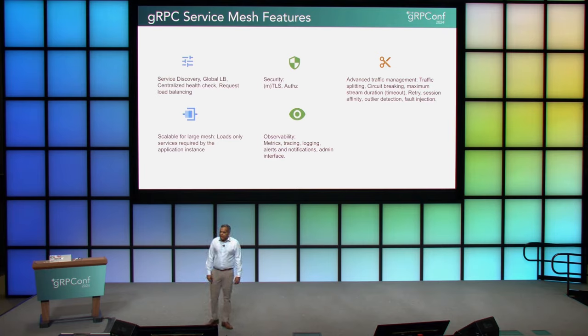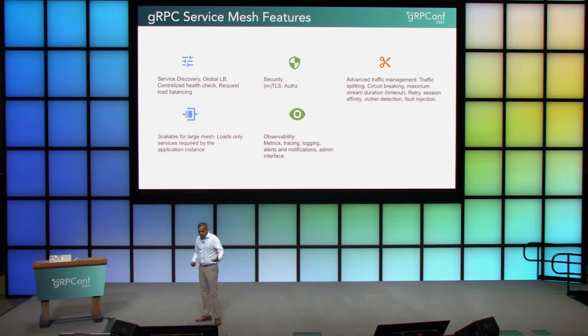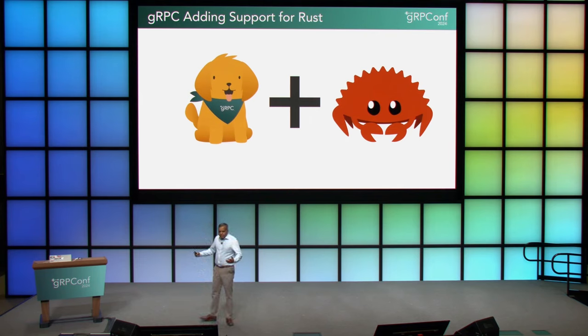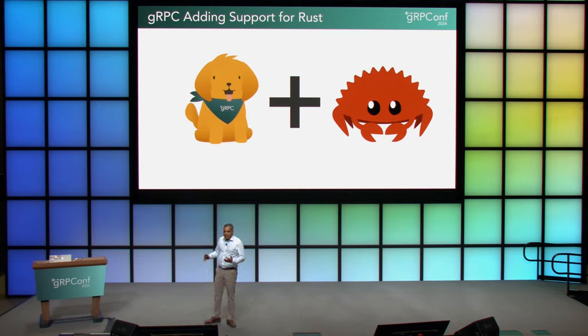Over the past year, we have seen community engagement continue to ramp up. Kevin mentioned all the contributions that Antoine has been making from Datadog. We have seen a number of contributions come out of Spotify across different languages. Paul from LinkedIn has been contributing pretty significant performance enhancements in Golang. All of this has enabled us to continue to ramp up our support across the languages we have. A couple of years ago we started hearing about community interest in Rust, and over the past year we spent time talking to Lucio, who had one of the most popular Rust implementations of gRPC. We now have a plan to bring it into CNCF and drive all of the interop and feature compliance to provide a really first-class experience for Rust developers.